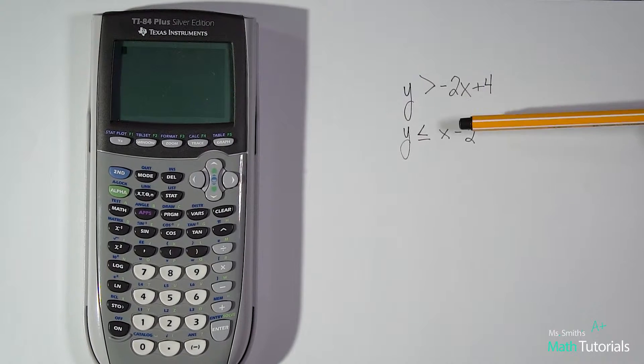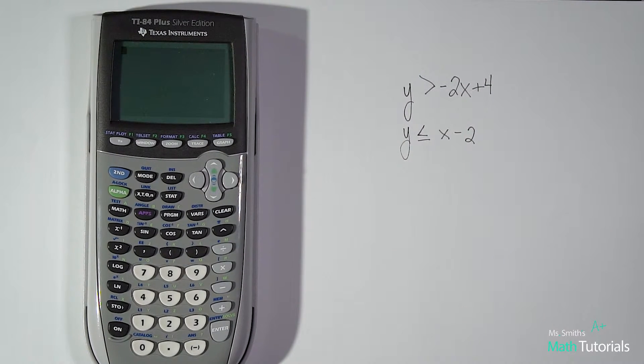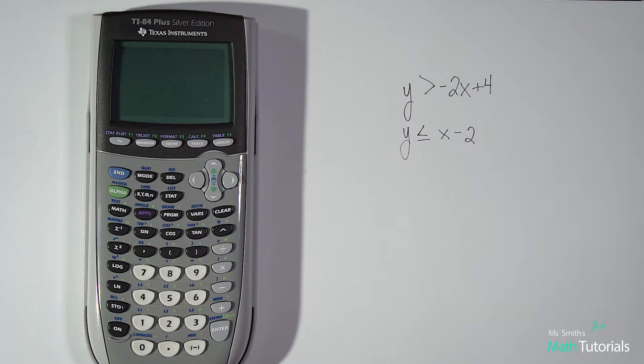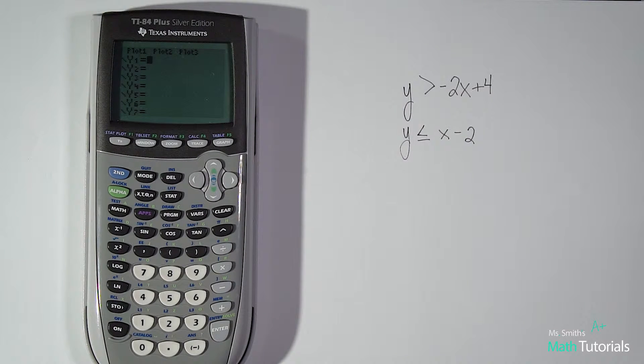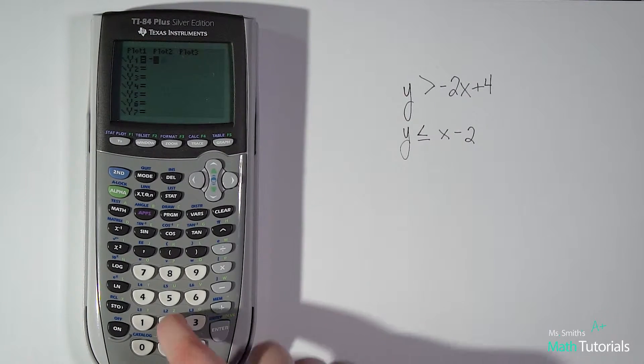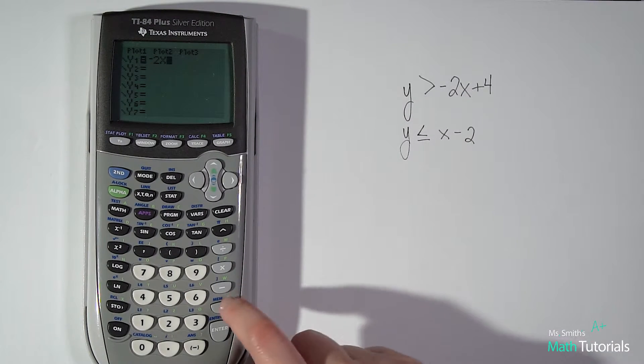Now you will see a little bit of difference in when you have an inequality. But it still works very much the same as far as steps. Make sure they're in slope intercept form. Go to your y equals. And let's type in the first equation. Negative 2x, negative 2x plus 4.